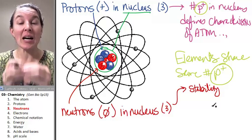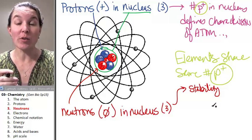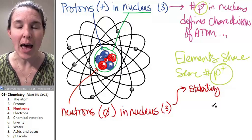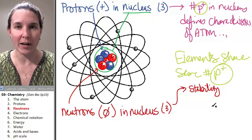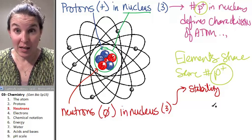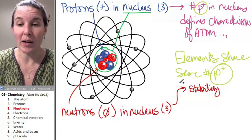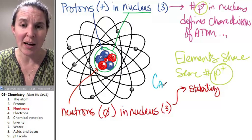But because the number of protons determines our element, the number of neutrons has nothing to do with what element we're in. In a study of life, the chemistry of life, carbon is probably one of the most important elements.